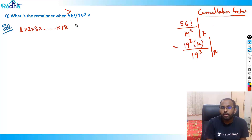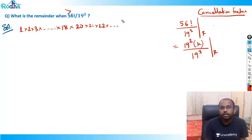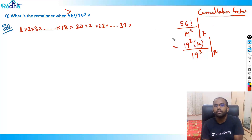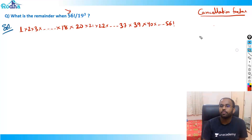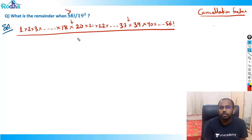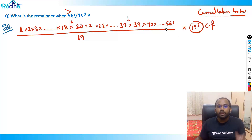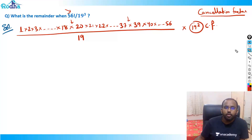Writing out 56 factorial: we go 1 through 18, then 19 is set aside as the first cancellation factor. Then 20 through 37, then 38 is set aside since 38 = 2 × 19 — that second 19 is cancelled. Then 39 through 56. So what's missing from 56 factorial are the factors of 1×19 and 2×19 (i.e., 19 and 38), and 19 squared is the cancellation factor.